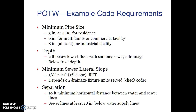What we notice from this is that there are some minimum pipe sizes. You can use either a 3 or 4-inch pipe diameter for residences. If you have a multifamily building, the diameter jumps up to 6 inches. And if it's an industrial facility, 8 inches at least.